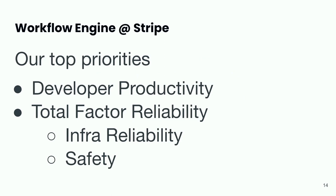Our top priority — we went breadth-first at Stripe. A lot of companies come in with one use case they want Temporal for, and then other teams notice and pile on. At Stripe, from the very beginning we said we see a lot of different things where this would be useful, and we're just going to build it for lots of people. I'm a big fan of this strategy because it meant early adopters would self-select, they'd be willing to take a risk on newer technology, and we wouldn't have to scale to Stripe's payments scale at the beginning.